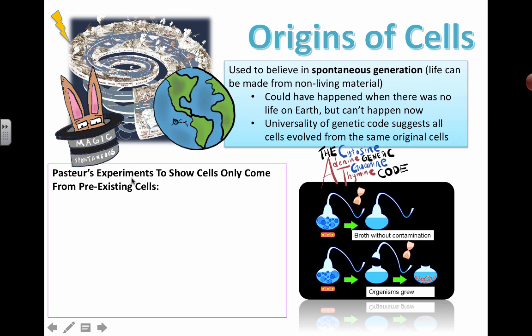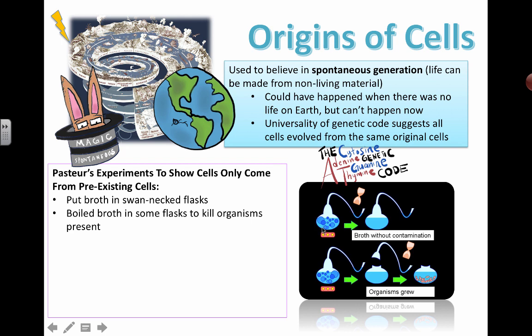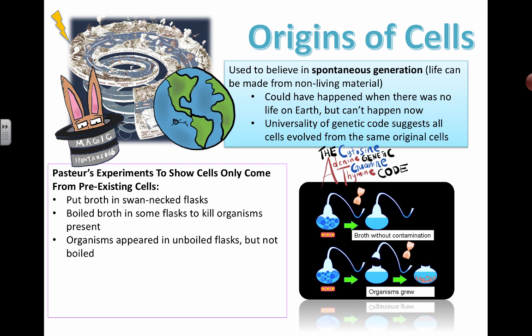Here's a simple experiment. Some broth was put in funny-shaped swan-necked flasks. Some of the broth was boiled to try and kill any suspected living things in there, and others were not boiled. More organisms appeared and became visible in the unboiled flasks but not in the boiled ones. This is linked to pasteurization — the idea of killing microorganisms in milk so that when we drink it, we're not getting sick.